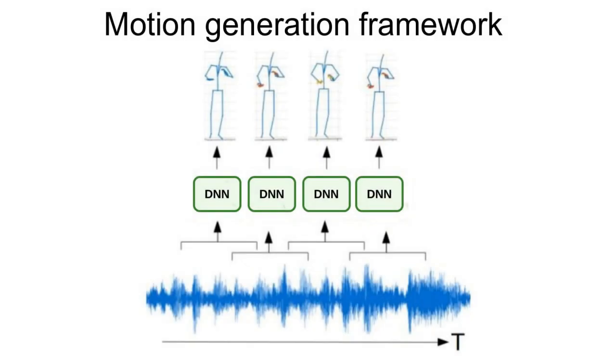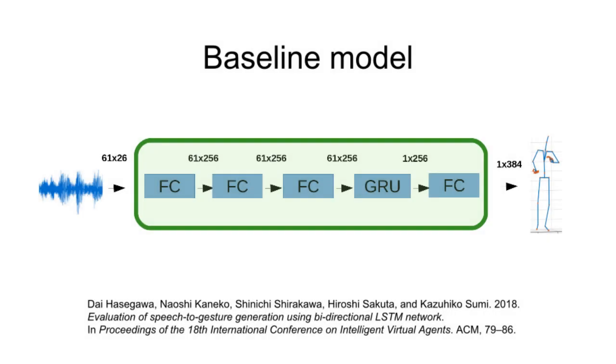A common approach to speech-driven gesture generation is to split a signal into overlapping segments and produce gestures for each segment using a deep neural network. The baseline model maps speech segments directly to motion frames using a recurrent neural network.